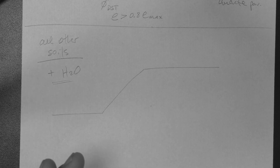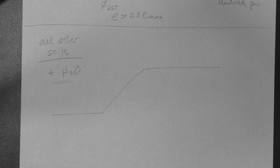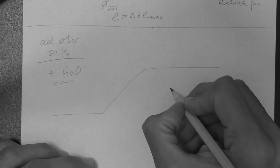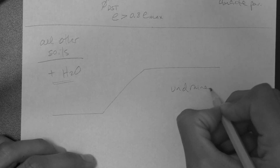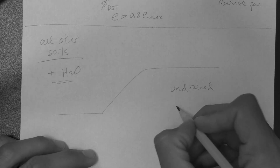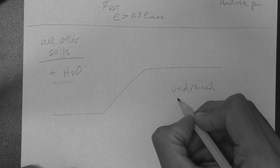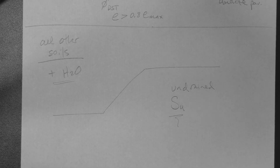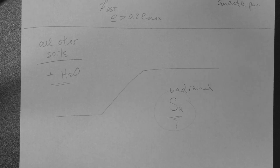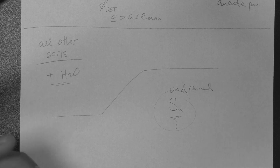For other soils — those that are wet or will get wet, and that contain enough fines such that their consolidation rate is slower than the speed at which the slope fails — we are talking about undrained conditions. Because of that, the relevant parameter tends to be the undrained shear strength. We are going to use the undrained shear strength to quantify the stability of a given slope, and that analysis will come next.